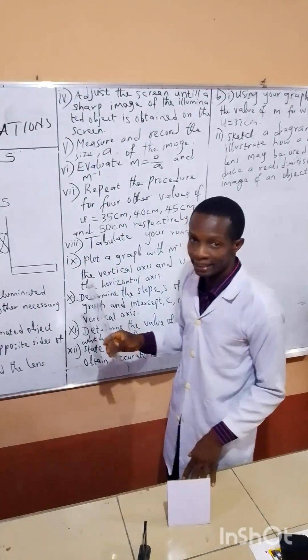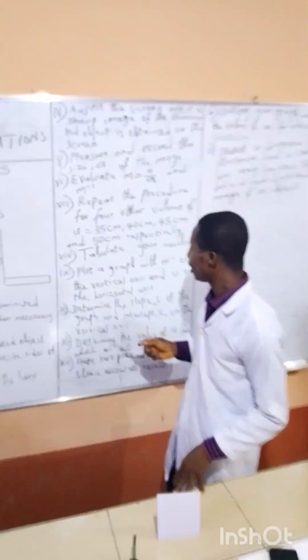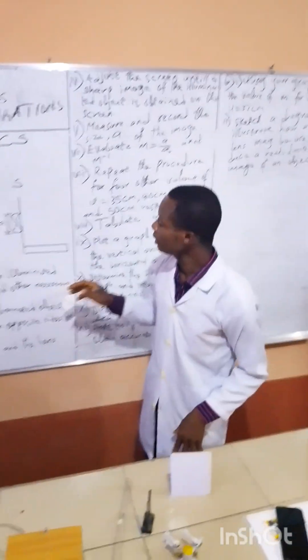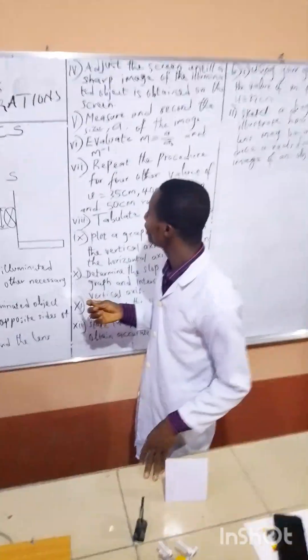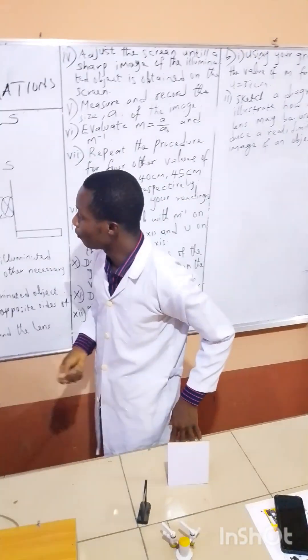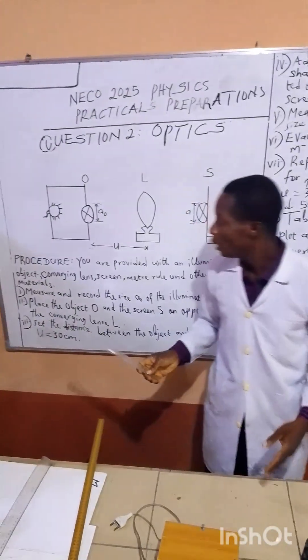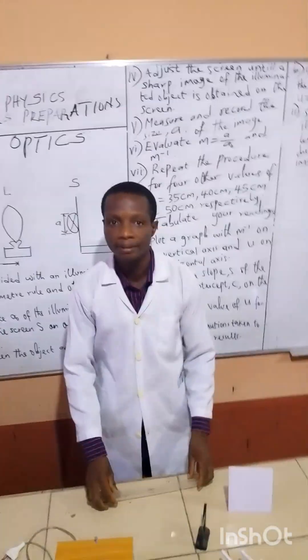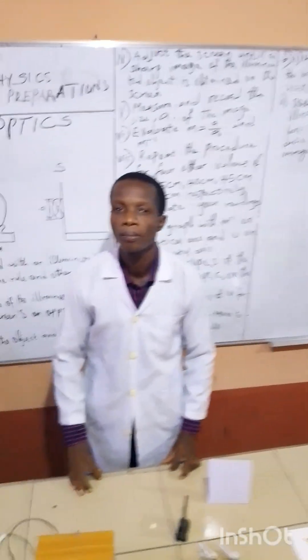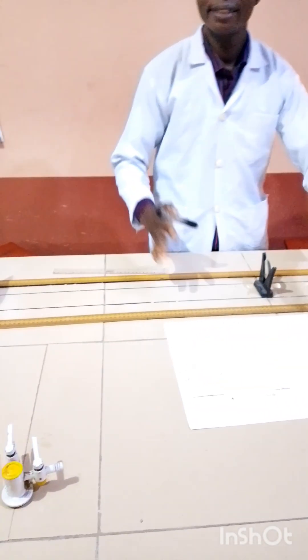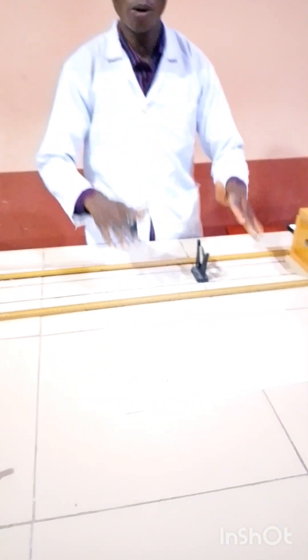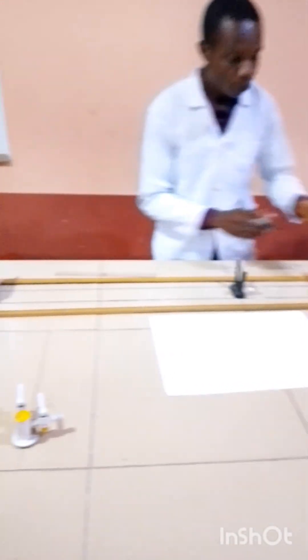Don't worry, it's going to be very easy. Then you plot your graph. I have already taught you how to plot the graph. This is quite easy. Let's quickly see how we can perform the experiment. This is the setup of the experiment for optics.